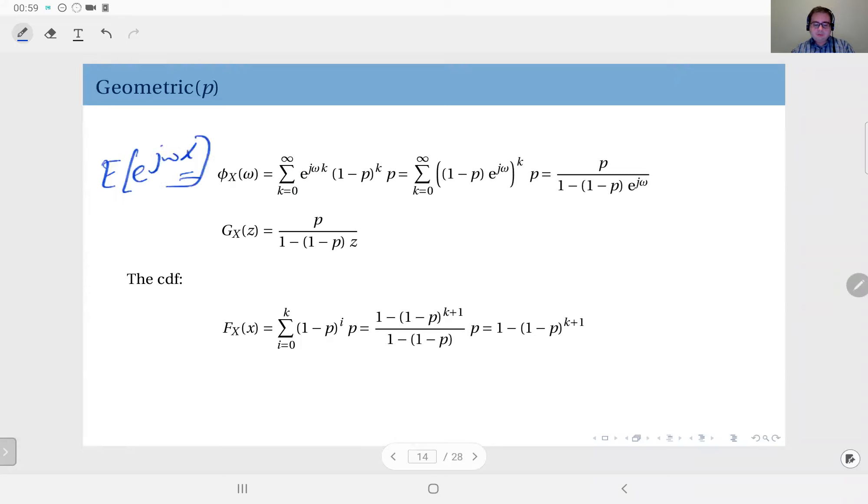Okay, and therefore I can use the PMF here, multiply that by e to the power jω k, add them up, and that will give me the characteristic function.